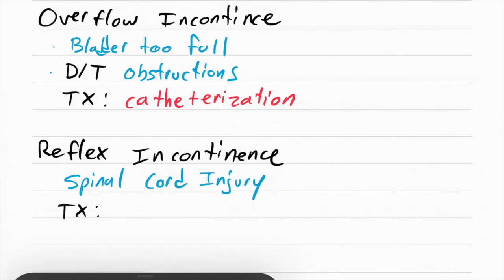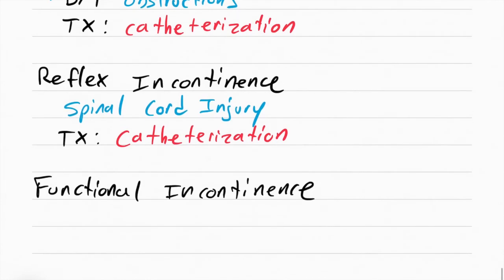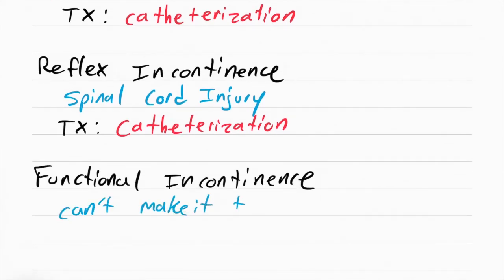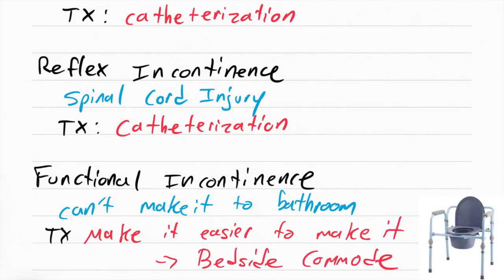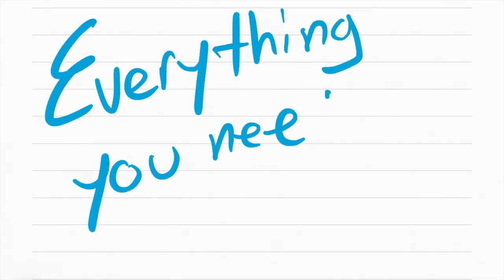The last type of incontinence is called functional incontinence, and this is when the patient can't make it to the bathroom for whatever reason. Maybe they can't walk, maybe they're paraplegic, maybe they can't talk and ask for help. Your job is to make it easier to make it to the bathroom, so get them a bedside commode. All right guys, that's everything you need for BPH.